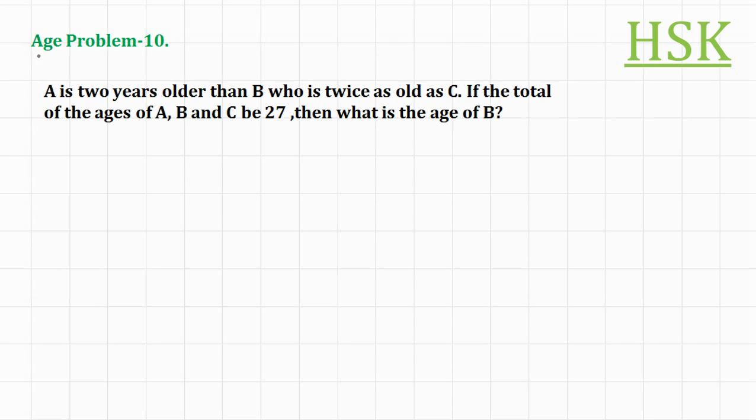Age problem 10. The problem is like this: A is 2 years older than B, who is twice as old as C.